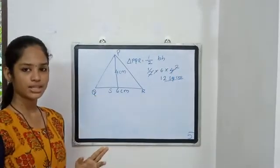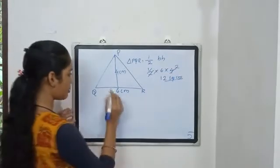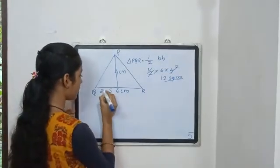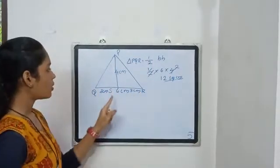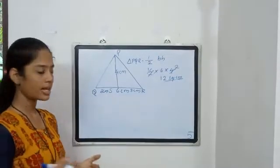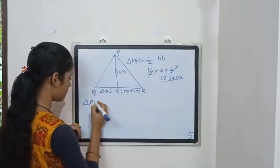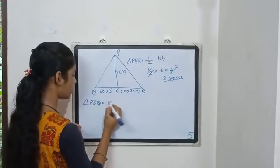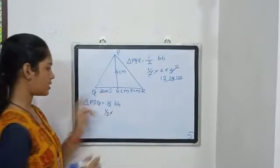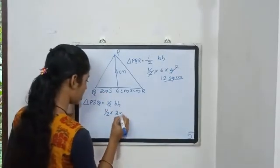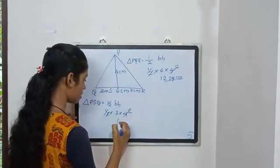Triangle PSQ equals half × base 3cm × height 4cm = 6 square centimeters. Triangle PSR equals half × base 3cm × height 4cm = 6 square centimeters. S is the midpoint from the bottom side, so the two triangles are equal.